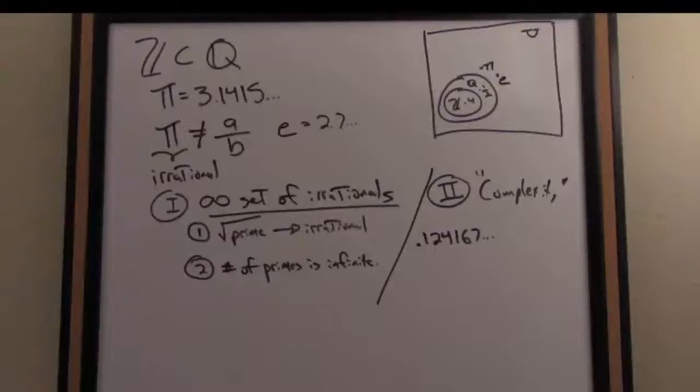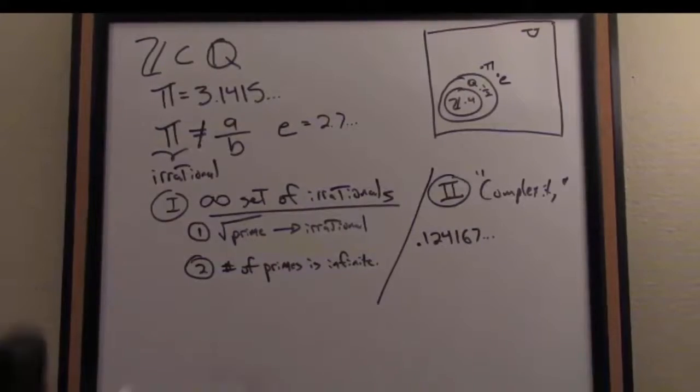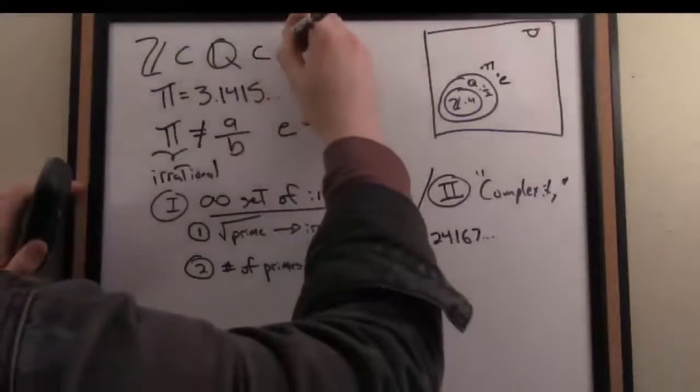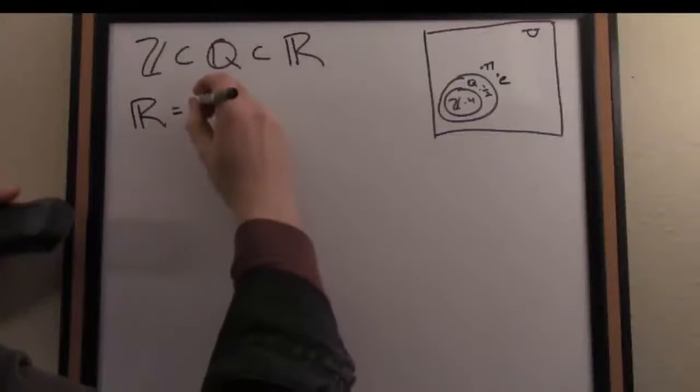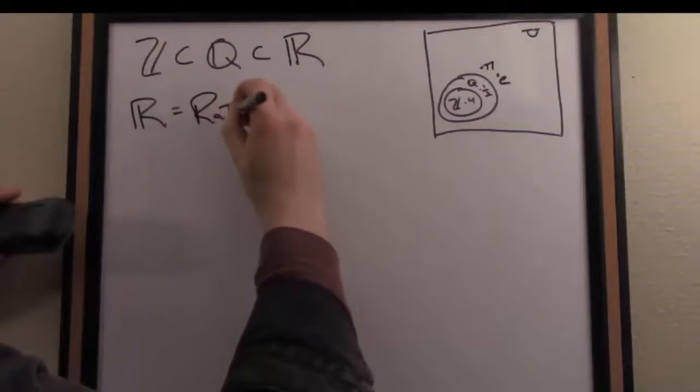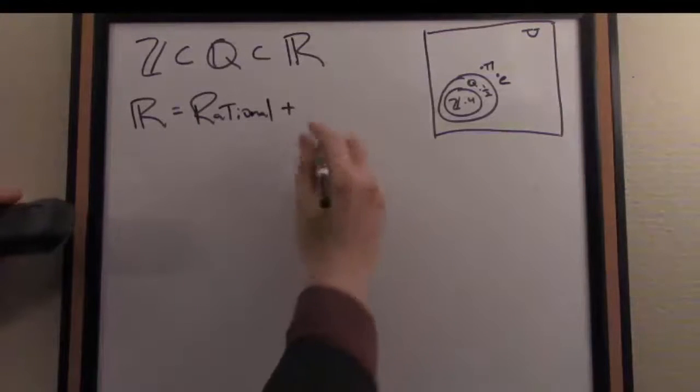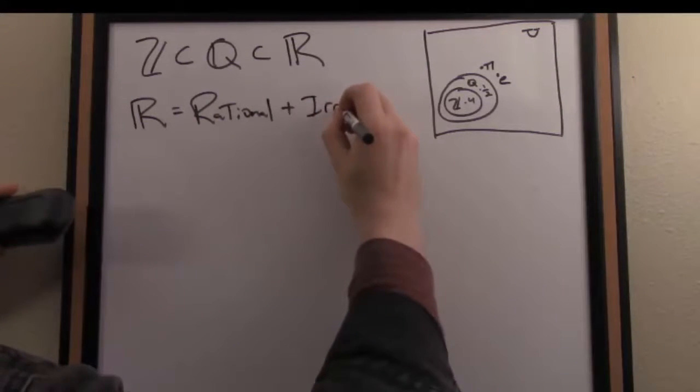This leads us to our next set of numbers, and the most important set of numbers of them all, which is the reals. The reals consist of the rational numbers, the rationals Q, plus, kind of informally, the irrational numbers.